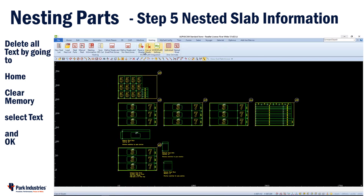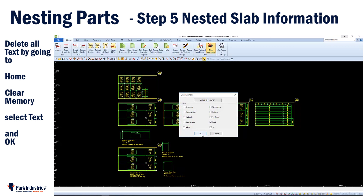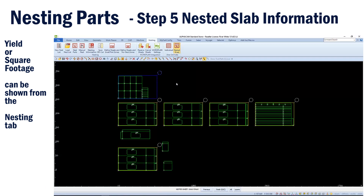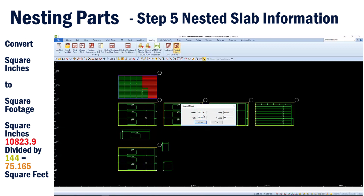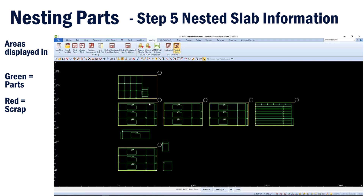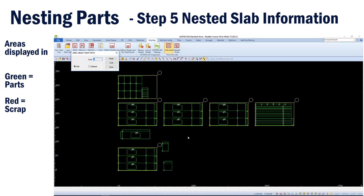You can easily clear all the text out of your drawing by going to the Home tab and choosing Clear Memory, selecting Text, and choosing OK. You can find information and the yield of each sheet by going to the Nesting tab, choosing Nested Sheet, and then selecting the outline of the sheet, followed by a finish. The values in sheet, parts, and scrap are displayed in square inches. To convert to square feet, divide the value by 144. The area displayed in green on the selected sheet represents the parts; the area displayed in red represents the square units of scrap. The area of individual parts are displayed in square inches as well.